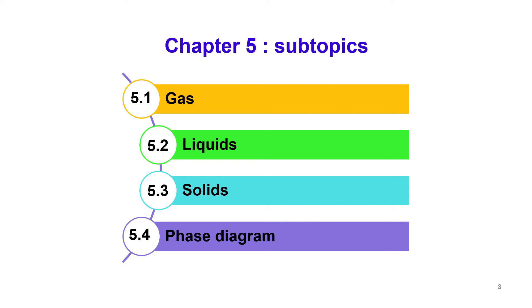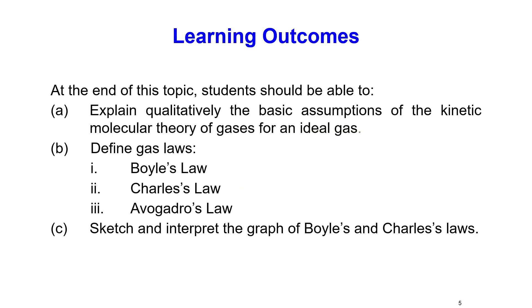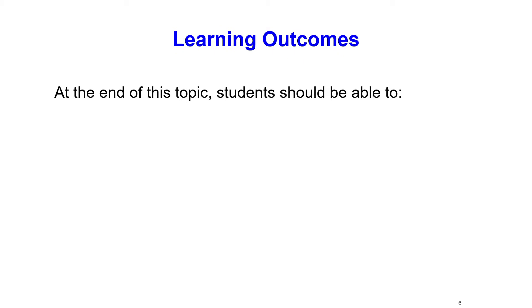The learning outcomes for this topic: we are going to explain qualitatively the basic assumptions of the kinetic molecular theory of gases for an ideal gas. Then we are going to define gas laws — we have three gas laws: Boyle's Law, Charles' Law, and Avogadro's Law. Third, we are going to sketch and interpret the graphs of Boyle's and Charles' Law.